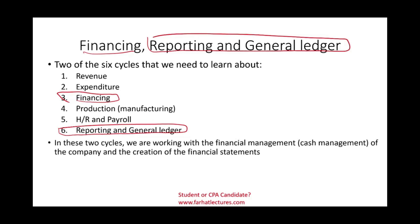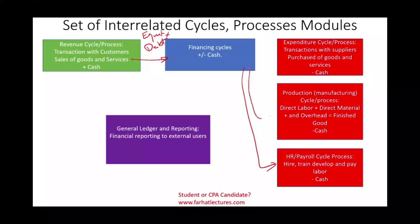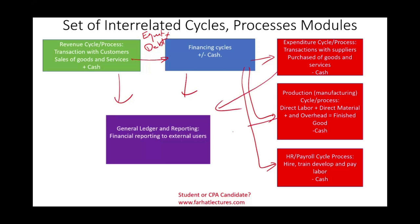From an overall perspective, these two cycles deal with financial management. The financing cycle specifically deals with cash management. Cash is the most important asset — cash is the oxygen of the company — and usually the treasurer deals with cash. The financing cycle gets cash from revenue, from equity when they issue stocks, and from debt such as bonds and loans. The financing cycle provides money to payroll, production, and finances the expenditure. All the cycles provide data to the general ledger and reporting cycles.